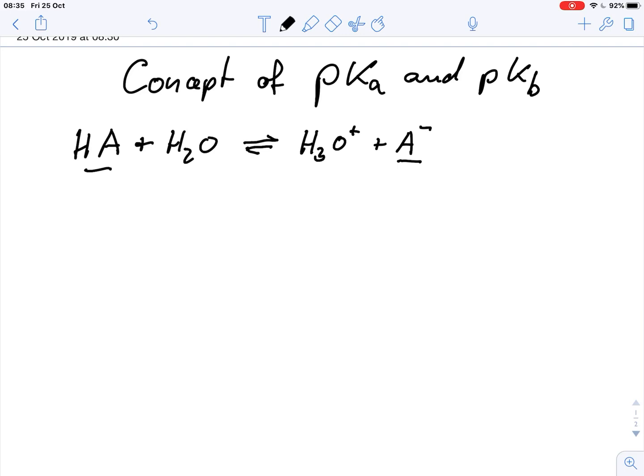Now we can write the equilibrium equation for this and we can say Ka, that's the equilibrium constant, equals the concentration of H3O+, and I abbreviate the concentration with these square brackets.